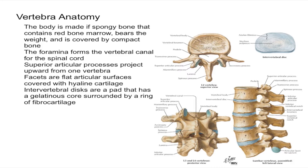It's important to remember that each process has a flat articular surface called a facet, which faces the adjacent vertebra. These processes restrict the twisting of the spine, which can obviously damage the spinal cord.